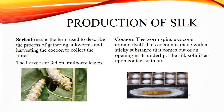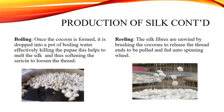Boiling: Once the cocoon is formed, it is dropped into a pot of boiling water, effectively killing the pupae. This helps to melt the silk and soften the sericin to loosen the thread. Reeling: The silk fibers are unwound by brushing the cocoons to release the thread ends, which are pulled and fed onto a spinning wheel.